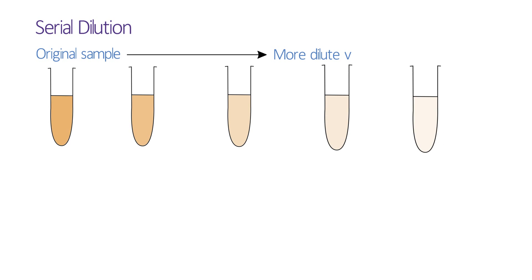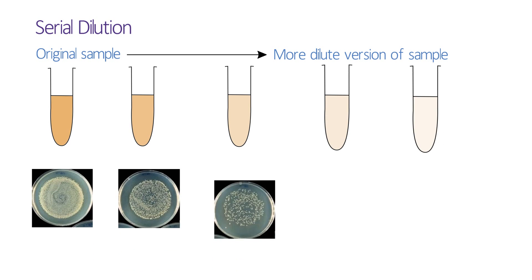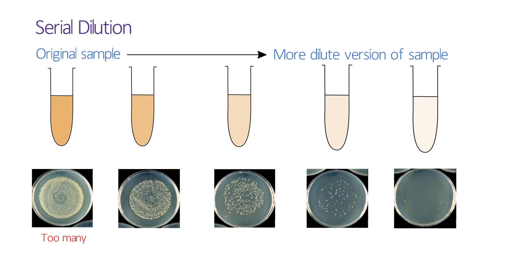We'll then plate each different dilution onto a different agar plate and allow the bacteria to grow overnight. Then hopefully one of those plates will have between 20 and 100 colonies, which is a good number to count. We can then work out from the system how many colony-forming units were present in the original sample.